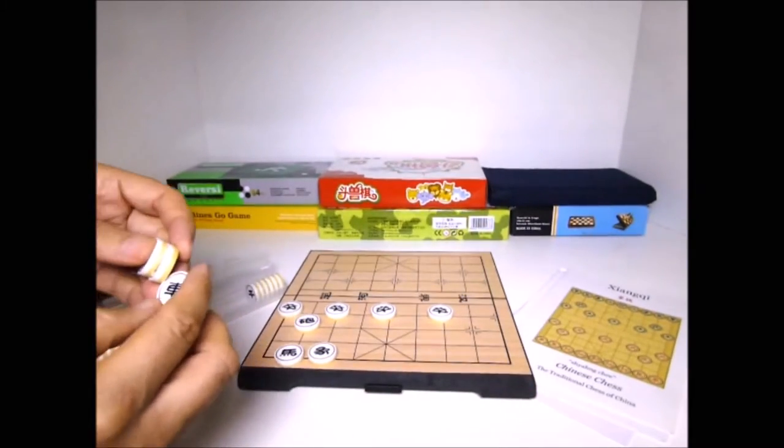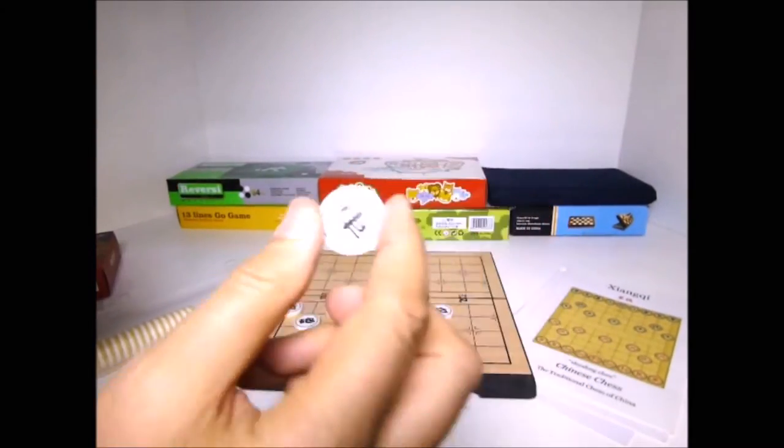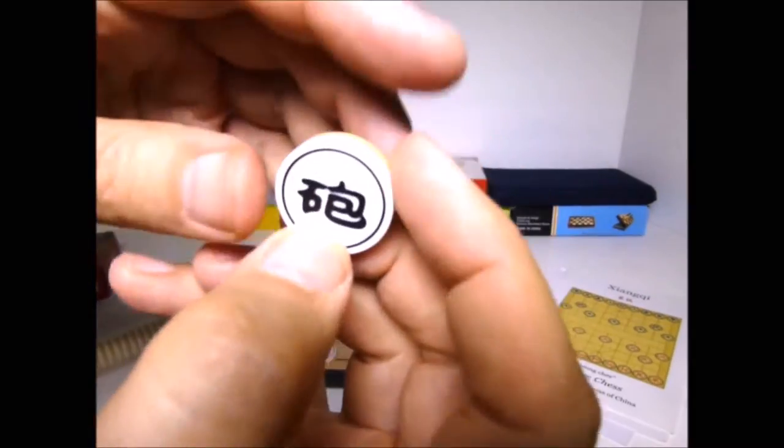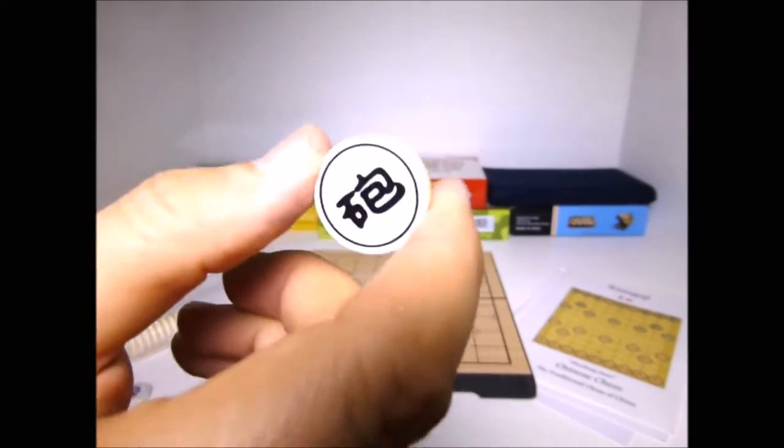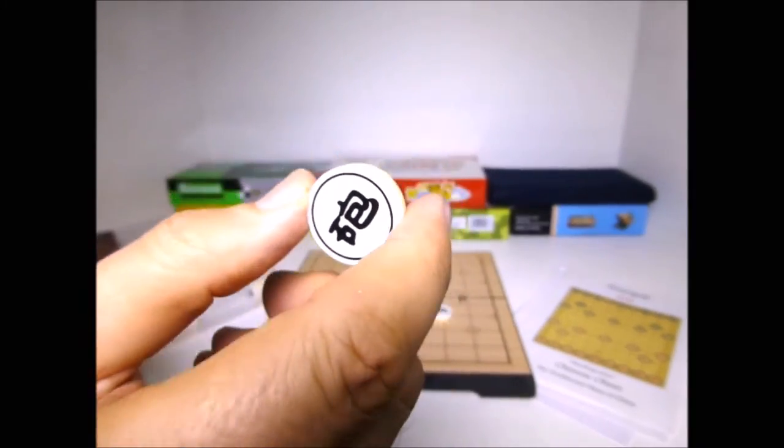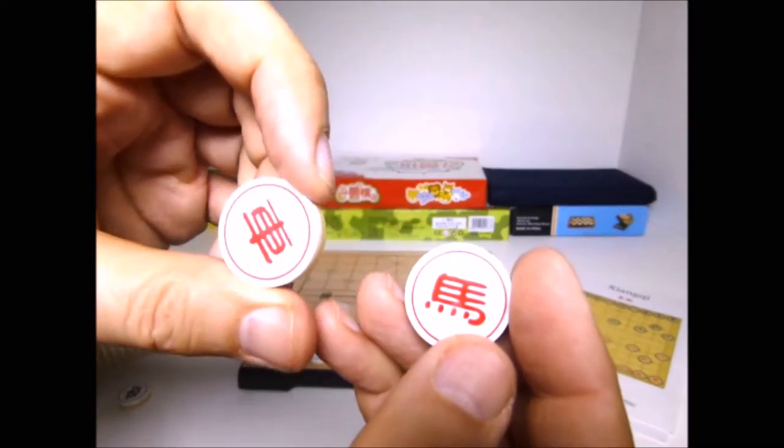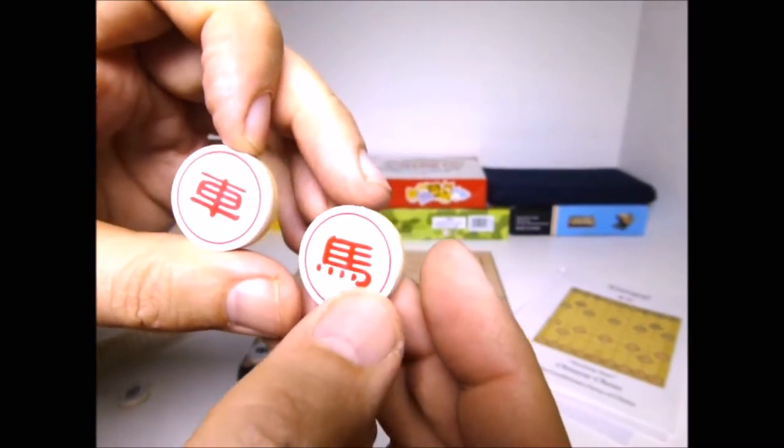I've also got the car or the cart, the chariot I guess you call it, and the cannon. Oh look, see? There's a magnet loose inside there. That's okay, that's the way these are. They're made hollow with magnets inside of them. There's the red horse and the red chariot.